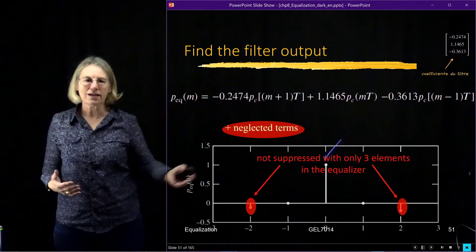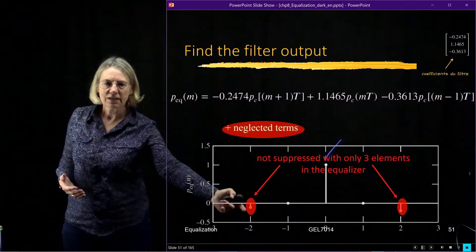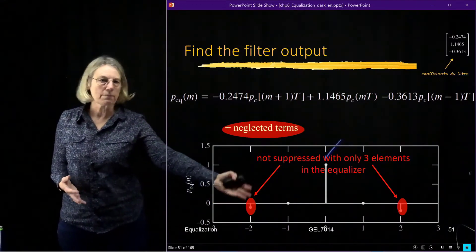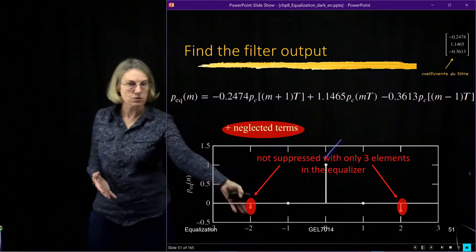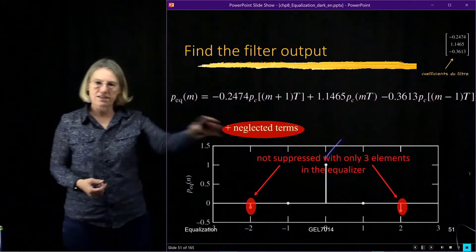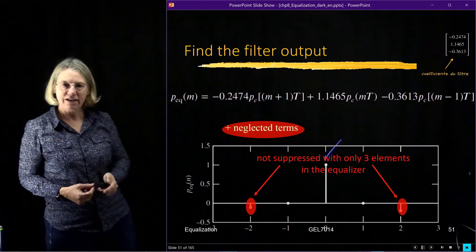But the fact that I don't—the fact that I have fewer taps—is what leads to some inter-symbol interference which was not suppressed. So that's because there were only three taps in our equalizer.